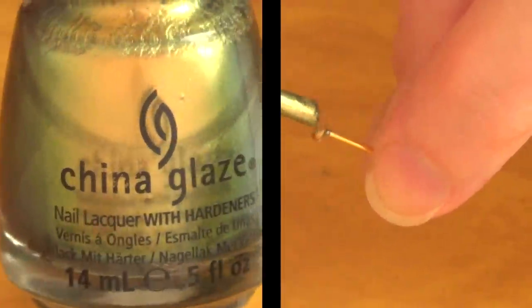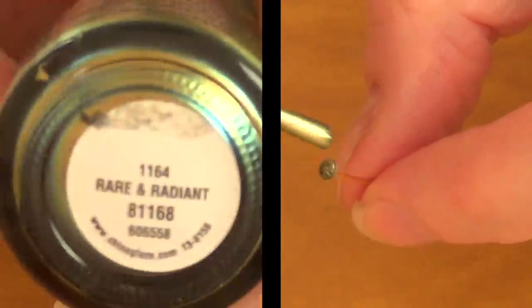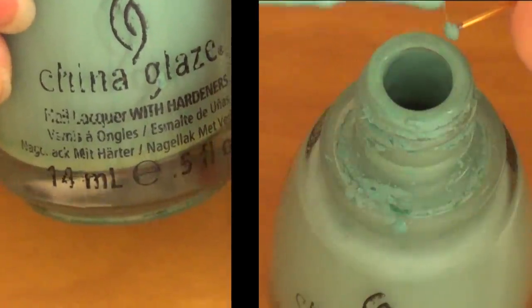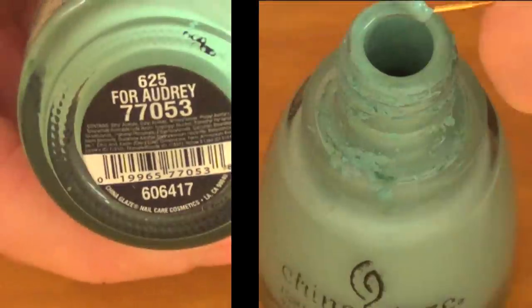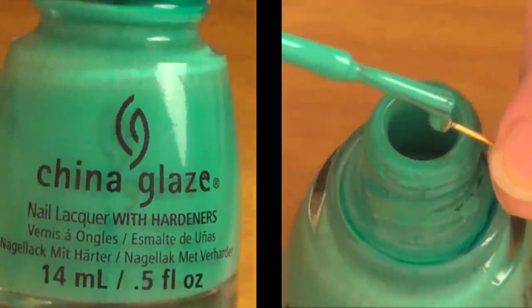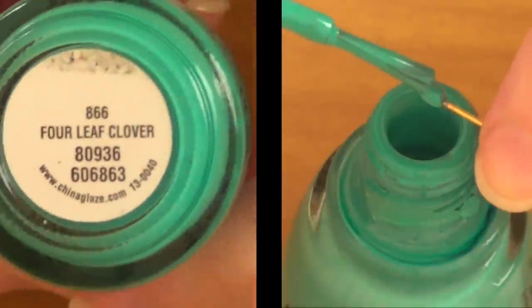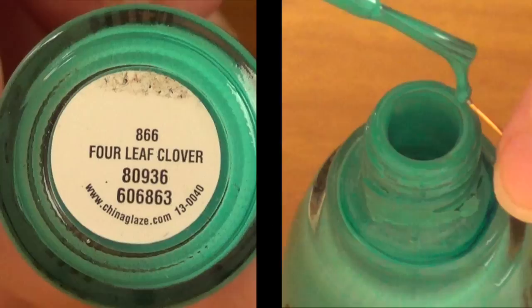For the gold one, I'm going to be using this China Glaze Rare and Radiant. In this case, I'm using China Glaze For Audrey. And for my green, I'm using China Glaze. And this is the name of it. I never know how to pronounce it, but that's it.